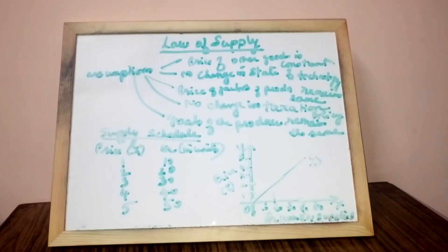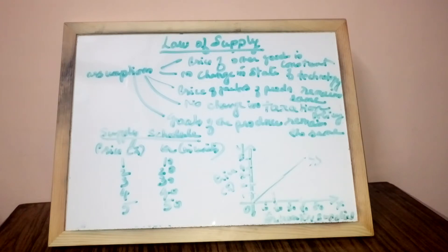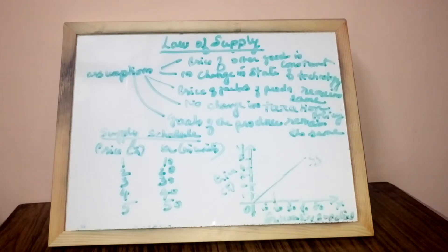This video explains the law of supply based on the behavior of sellers. The law of supply states the direct relationship between price and quantity supplied, keeping other factors constant. So when the price of a commodity increases, there is more supply of that commodity in the market, and vice versa.